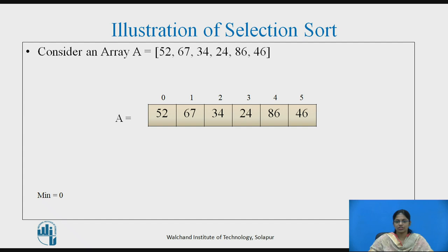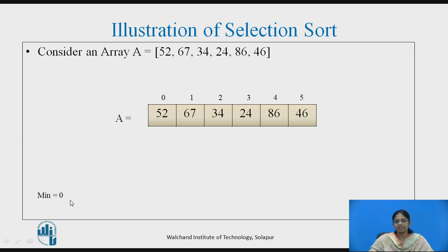Let us see the illustration of Selection Sort. We consider an array A with six elements: 52, 67, 34, 24, 86, and 46. These array elements are placed in the array where the array starts with index 0 and ends at index size minus 1. In selection sort, we use a variable called min. The minimum index variable holds the index of the smallest element. At the very beginning, we do not know which is the smallest element, so we assume the minimum index is equal to 0.